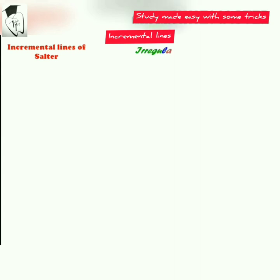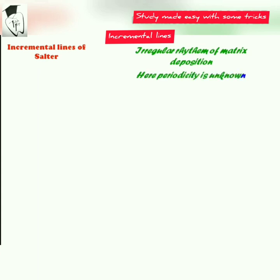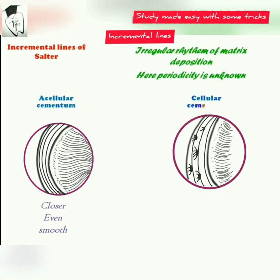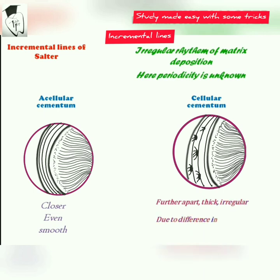Now coming to the incremental lines of Salter, which show the mineralization process of cementum. The deposition of cementum matrix occurs in an irregular rhythm and the periodicity is unknown. In acellular cementum, the incremental lines are closer, even, and smooth. In cellular cementum, the incremental lines are further apart, thick, and irregular, due to differences in the degree of mineralization or composition of the underlying matrix.